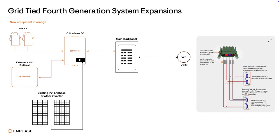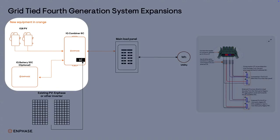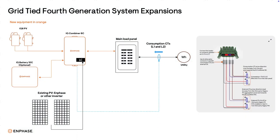Now let's take a look at a grid-tied example. In grid-tied setups, you add PV and possibly batteries as well, but the system would lack backup capability. This option may be desirable if saving more money is the only priority and backup power isn't needed. The expansion system consists of the IQ Combiner 6C, IQ 8 PV, and optionally batteries as well. Note there is no IQ meter collar in this configuration. To enable consumption monitoring, consumption CTs must be installed on L1 and L2 of the utility feeders to the main load panel, and an additional set of consumption CTs must be installed on L1 and L2 of the existing PV. The CT leads must be wired in parallel to port number 8 in the IQ Combiner 6C.